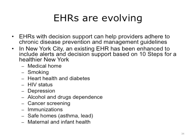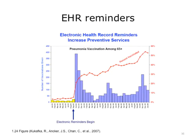New York City provides perhaps one of the earliest examples of how electronic health records are being used for public health purposes. An existing EHR has been enhanced to include alerts and decision support based on 10 Steps for a Healthier New York. These steps are connected to the leading causes of preventable death previously discussed, including smoking, chronic disease, heart disease, and diabetes. Data collected from an EHR showed that when electronic reminders were used to prompt providers to vaccinate adults aged 65 and over, there was a corresponding increase in the number of adults vaccinated according to the guideline. Such alerts have important potential to improve preventive and public health services at the point of care for populations with or at risk for chronic diseases.